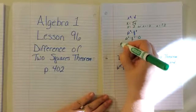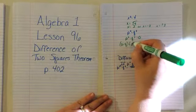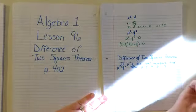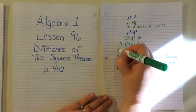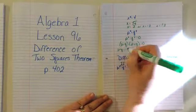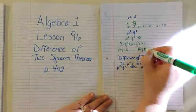So we know that if we have the difference of two squares, then the factors are going to be p minus q times p plus q equals 0. And if we solve both of these for p, we have p minus q equals 0 and p plus q equals 0.